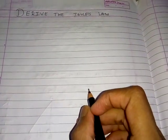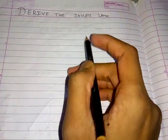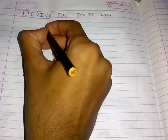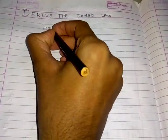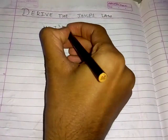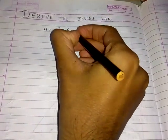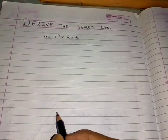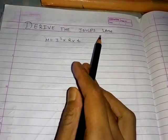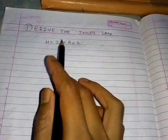Hello friends, today I will show you how to derive Joule's law. Joule's law is H equals I squared into R into T, that is the square of current into resistance into time.